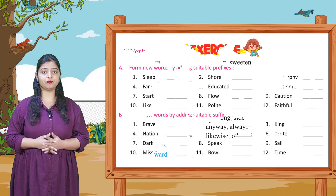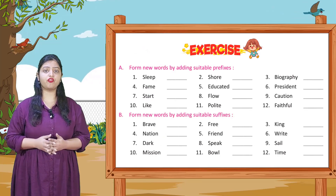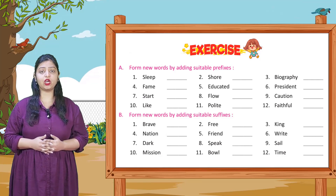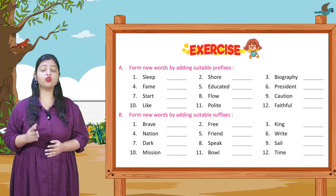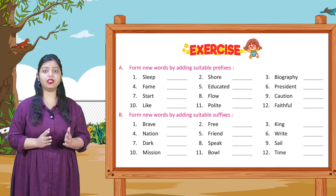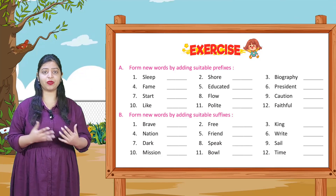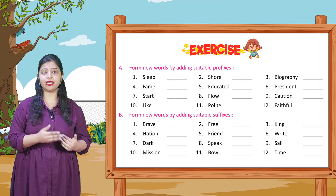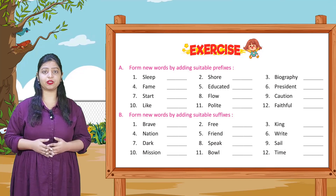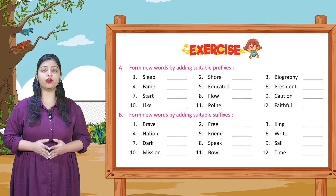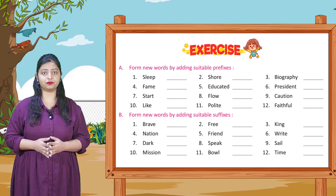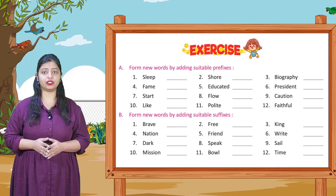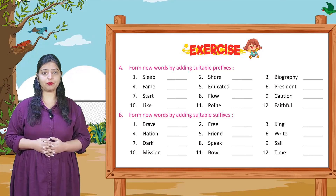Ab kuch exercises dekhiye. Section A: Form new words by adding suitable prefixes. Yahan par aapko kuch words diye gaye hain unme se aapko naye words banana hai, kuch prefixes add karke. Pehla: sleep → asleep, sure → assure, biography → autobiography, fame → defame, educated → uneducated. Isi tarike se baaki aap apne aap complete karenge.